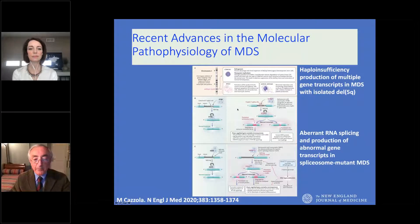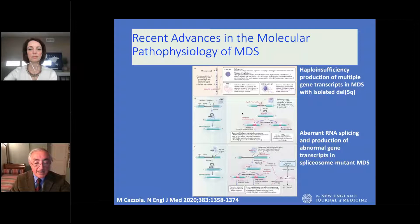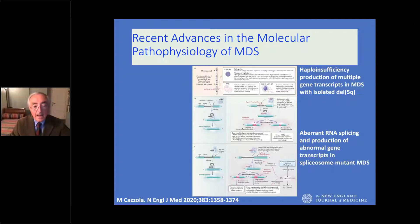About half of patients have somatic mutations in spliceosome genes, and aberrant RNA splicing and production of abnormal gene transcripts is the major mechanism of disease. There are substantial differences among different spliceosome genes — for instance, SF3B1 mutant MDS is a relatively benign disease, while SRSF2 mutant MDS is a very aggressive disease.